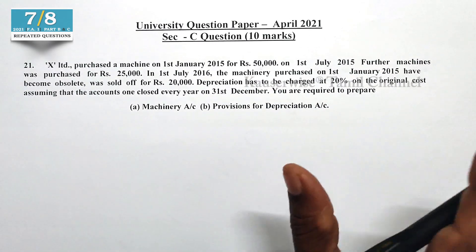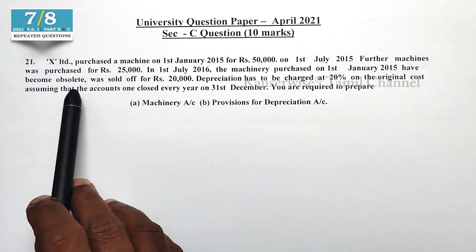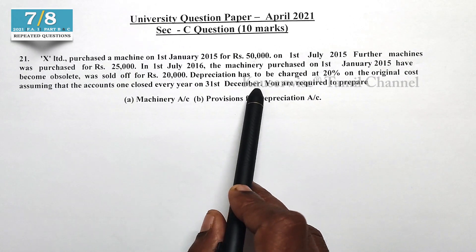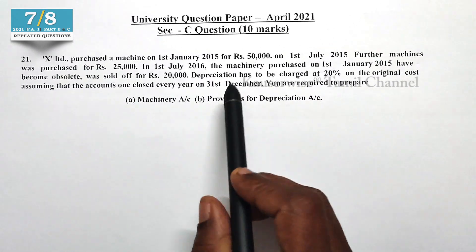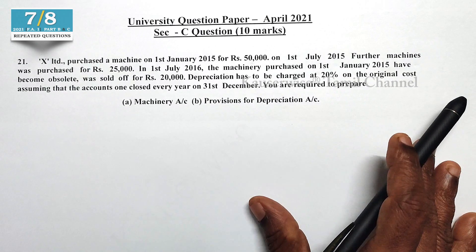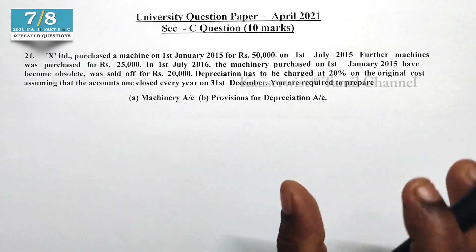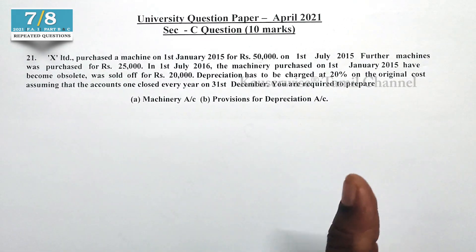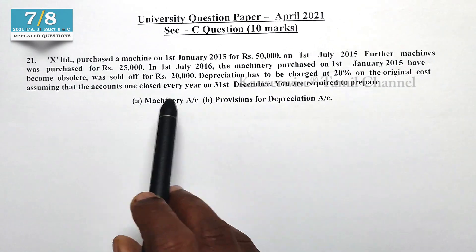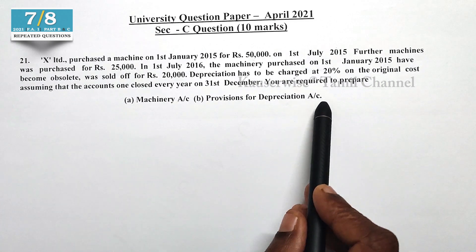Depreciation has been charged at 20% on the original cost — that is the straight line method. So we calculate 20% on the original value every year. Assuming that the accounts are closed every year on 31st December, we are required to prepare the machinery account and provision for depreciation account.